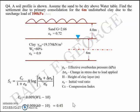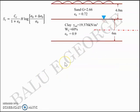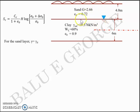Looking at the equation, we have Cc, E₀, H, and Δσ₀ directly given. So now we need to find σ₀, the effective overburden pressure at the mid layer of the clay. For the sand layer, since the water table is at the interface between the sand and clay, we use the dry unit weight. The formula is γ_d = (G / (1 + e)) × γ_w.